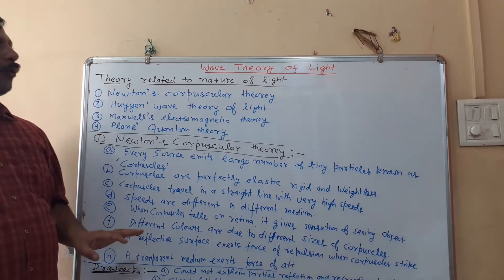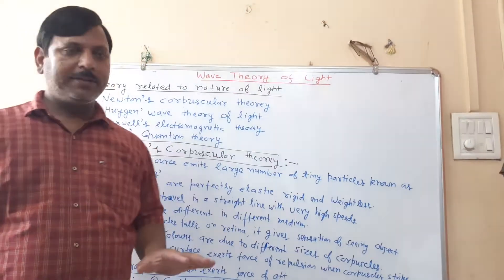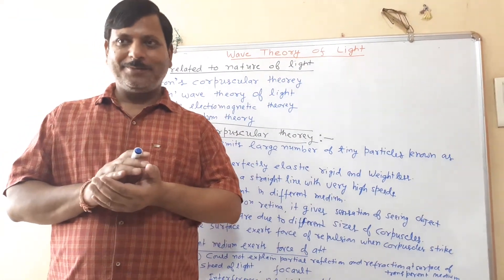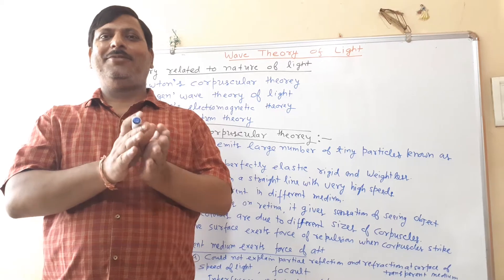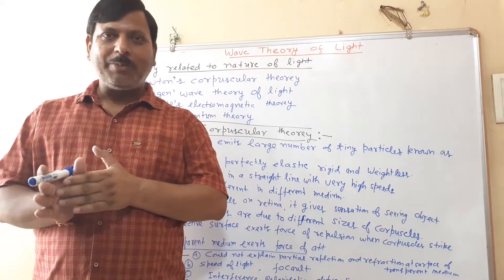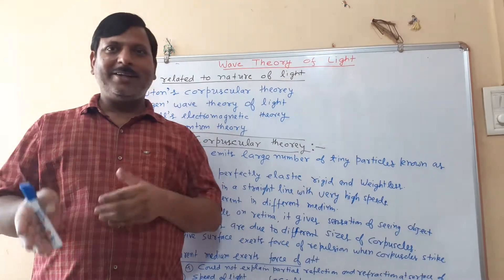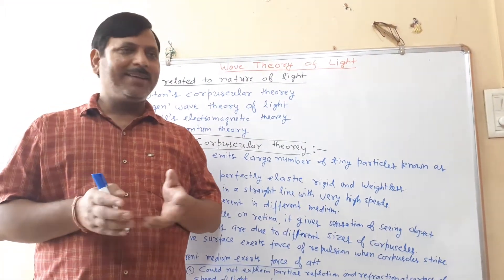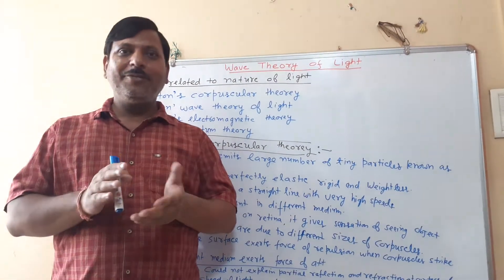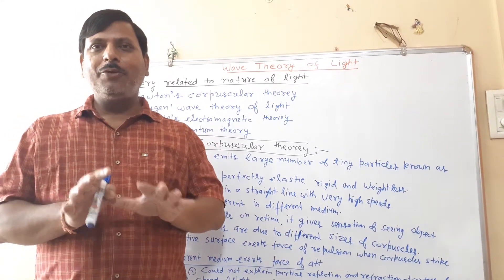Today we are going to start with the theory of light. Light is a form of energy. We have divided light into two parts: one is optics and the other is optics. In geometric optics, we discuss reflection and laws of reflection. Today we are going to discuss the nature of light — its particle nature and its wave nature.